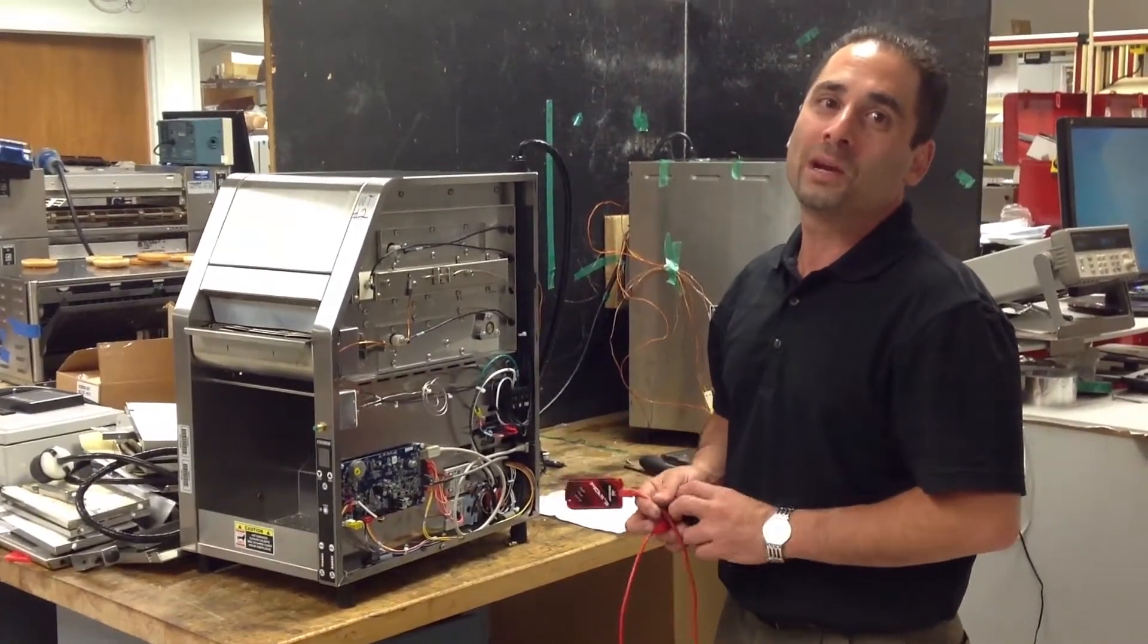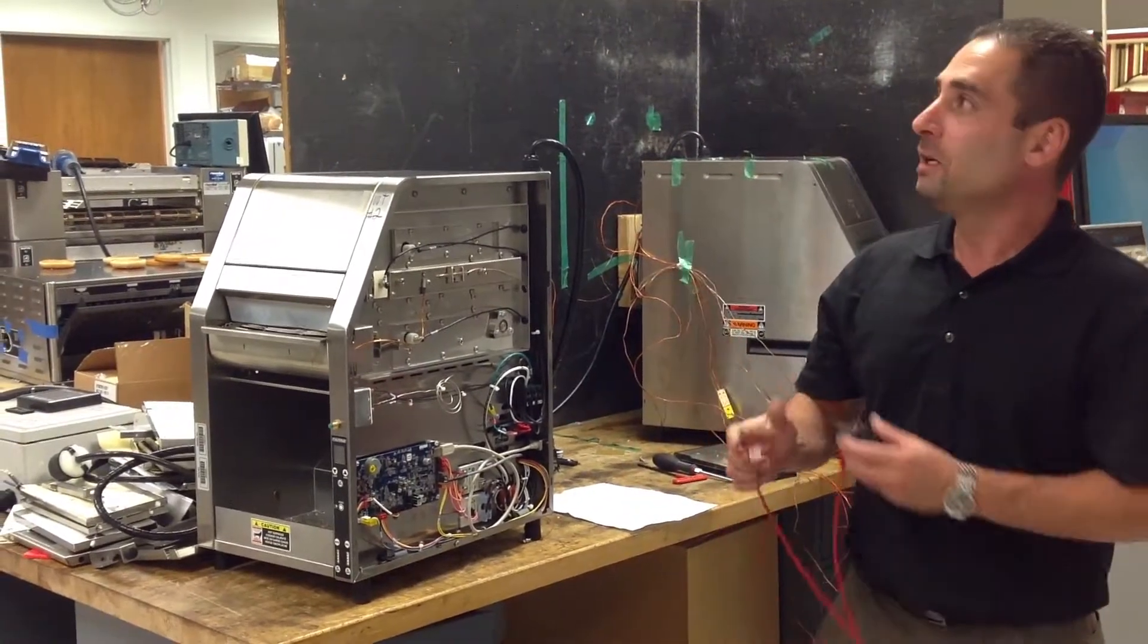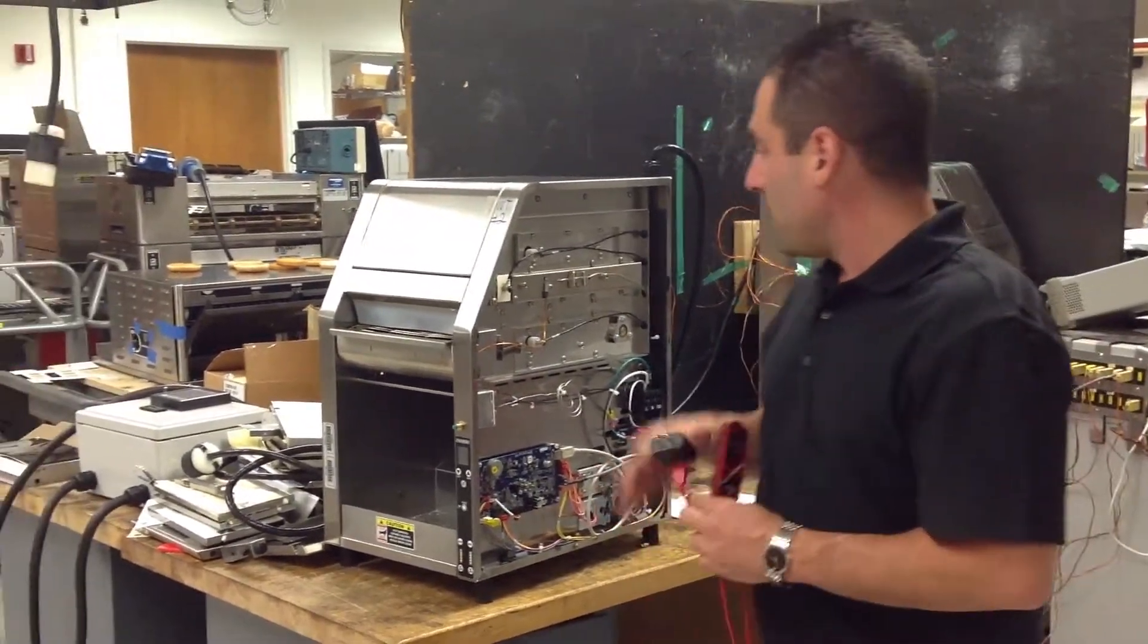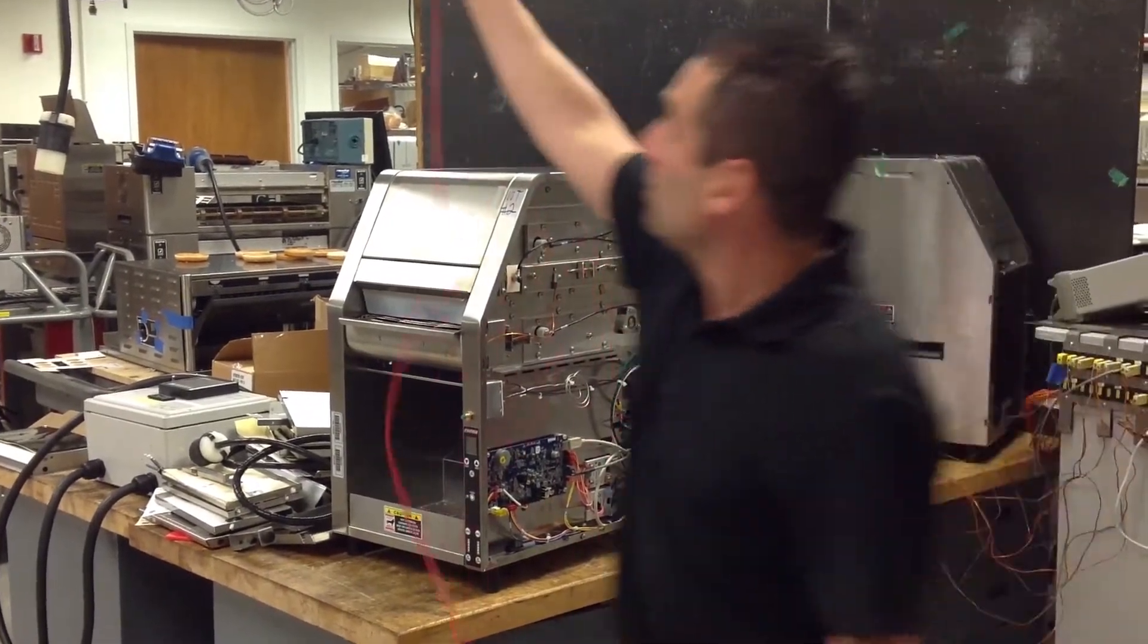Now I'm going to show you how to upgrade the firmware on the RT2 toaster using the picket. The first thing we're going to do is have our side panel off and toaster unplugged.